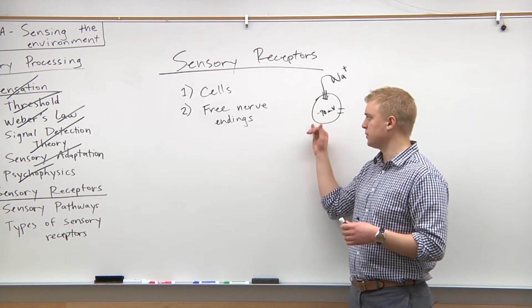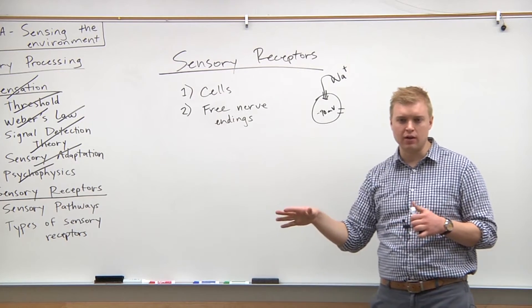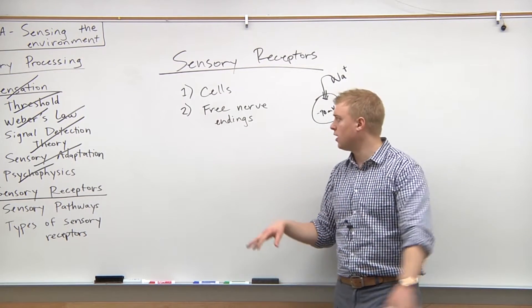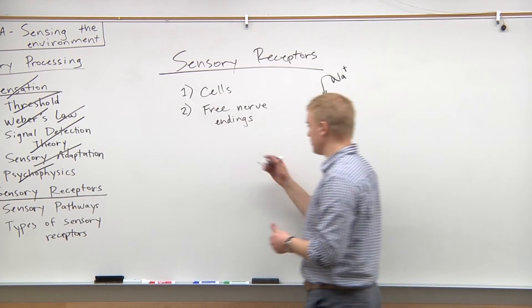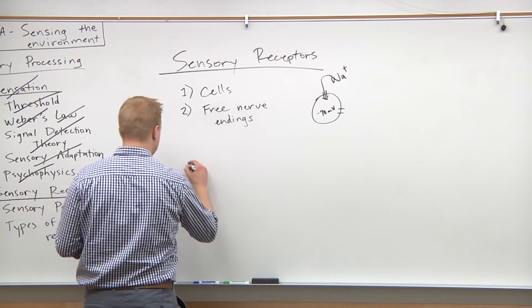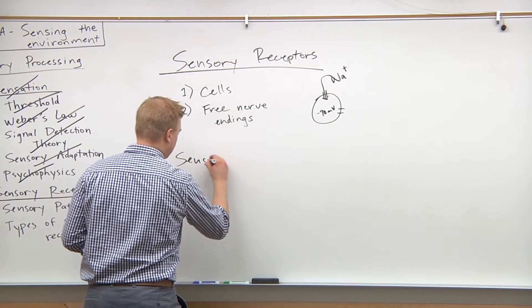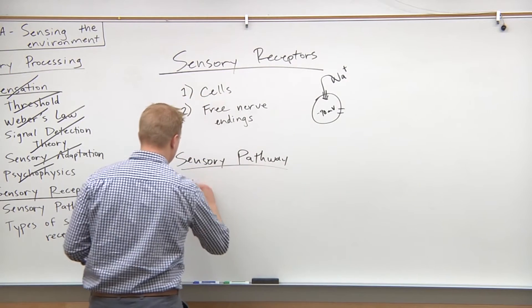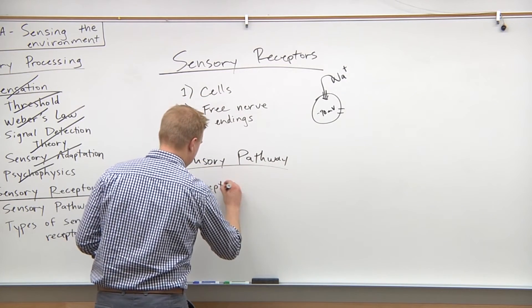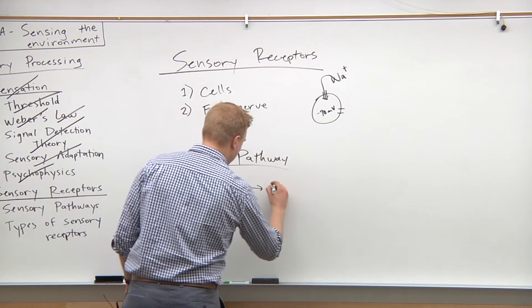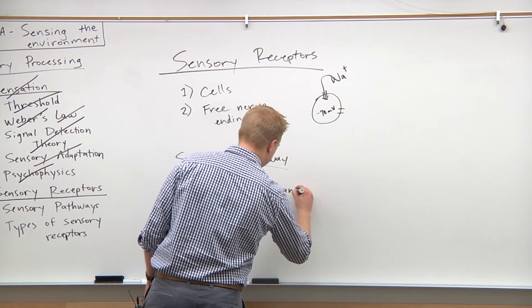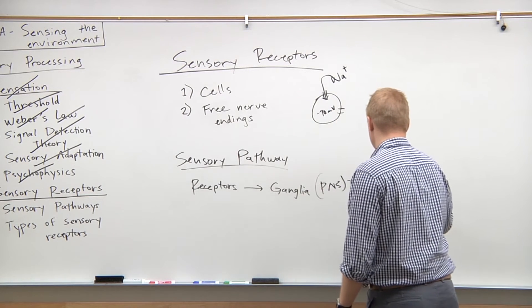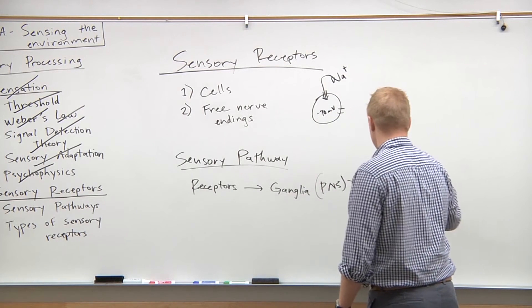This action potential is then transmitted through sensory ganglia — collections of nerve cell bodies outside the CNS. So the sensory pathway goes from the receptors, through ganglia in the peripheral nervous system, and is sent to the central nervous system.